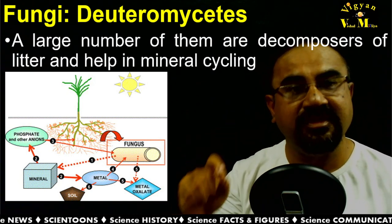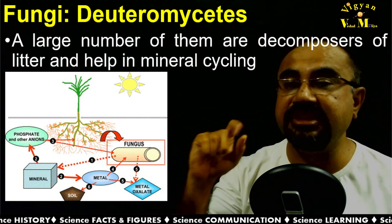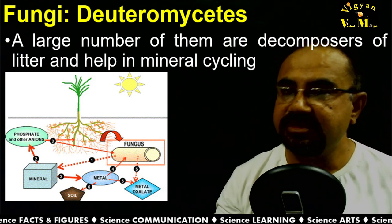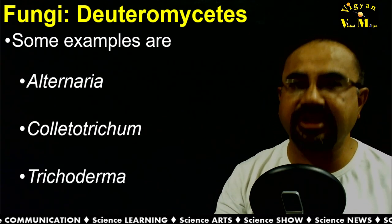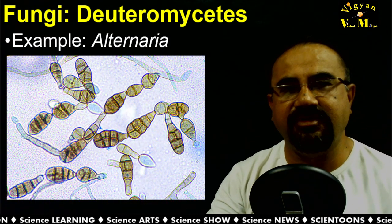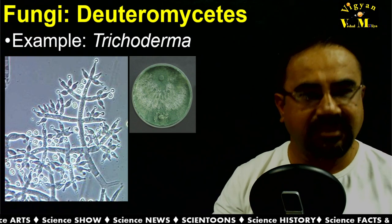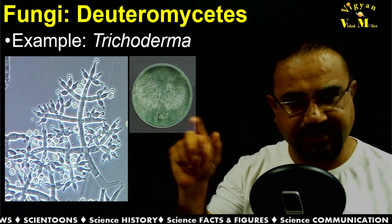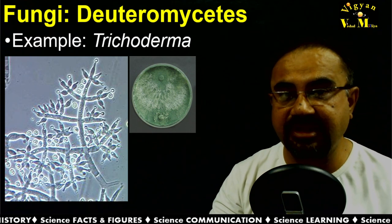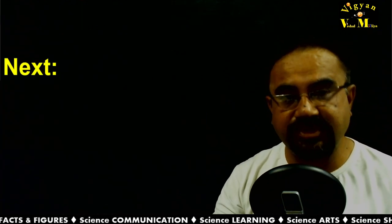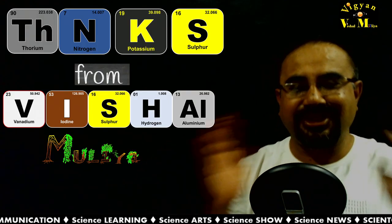Decomposers in Deuteromycetes are very important in terms of economy as well as ecology, and will be discussed in detail in coming lessons. Examples of Deuteromycetes include Alternaria, Colletotrichum, and Trichoderma. Trichoderma has a lot of economic importance and will be studied in detail in 12th standard. In the next video we will study viruses, viroids, and lichens.